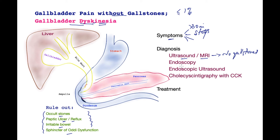How do we exclude these conditions? By performing an endoscopy — a camera look inside the stomach and small bowel — to assess for peptic ulcer disease and reflux. The important investigation is the endoscopic ultrasound, where an endoscope follows the same path but has an ultrasound scanner attached. This takes very close-up pictures of the gallbladder and bile tube, assessing for occult stones, biliary crystals, or cholesterol deposits.